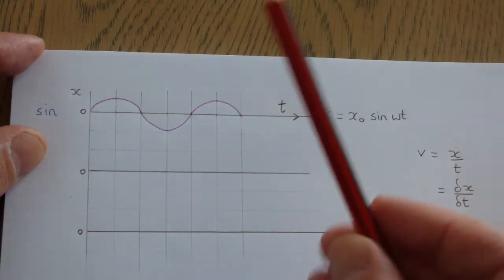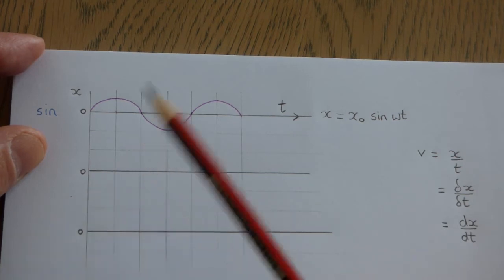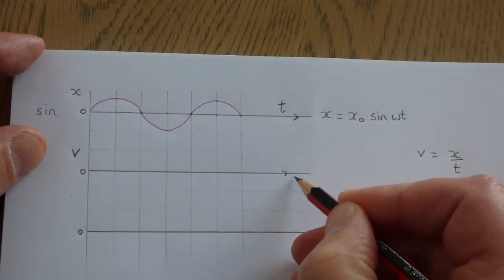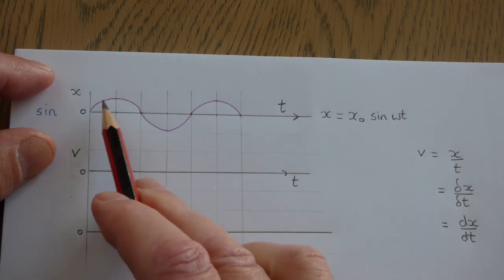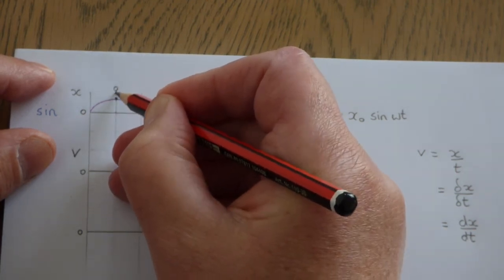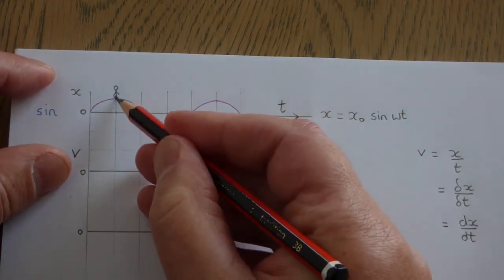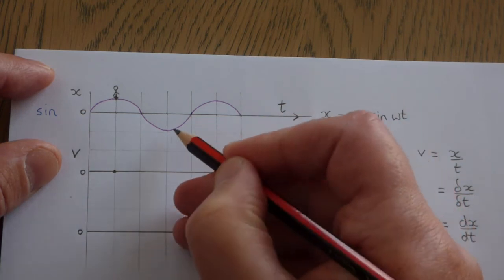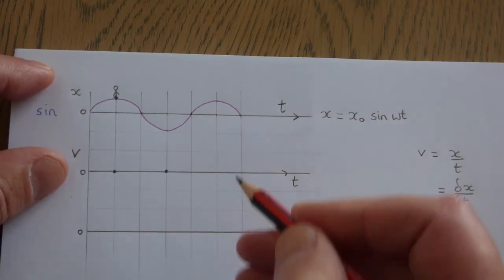On these graphs, we're going to find the gradient at various points and plot those values on the graph below to produce a velocity-time graph. It's clear that at some points the gradient is zero — for example, at the peaks. If you stood on that point you wouldn't slide off the curve, so the gradient is zero, and we plot zero on the graph below. The gradient is also zero at other peaks, so we plot more zeros.